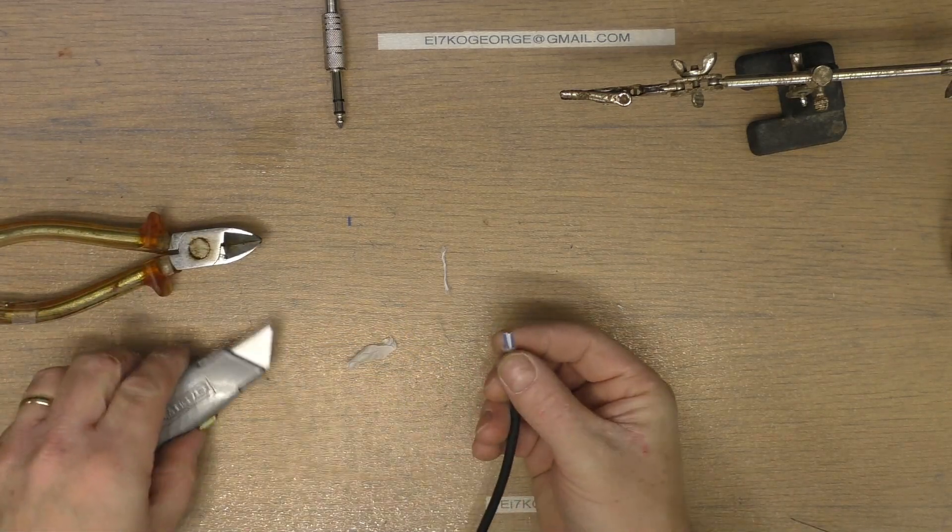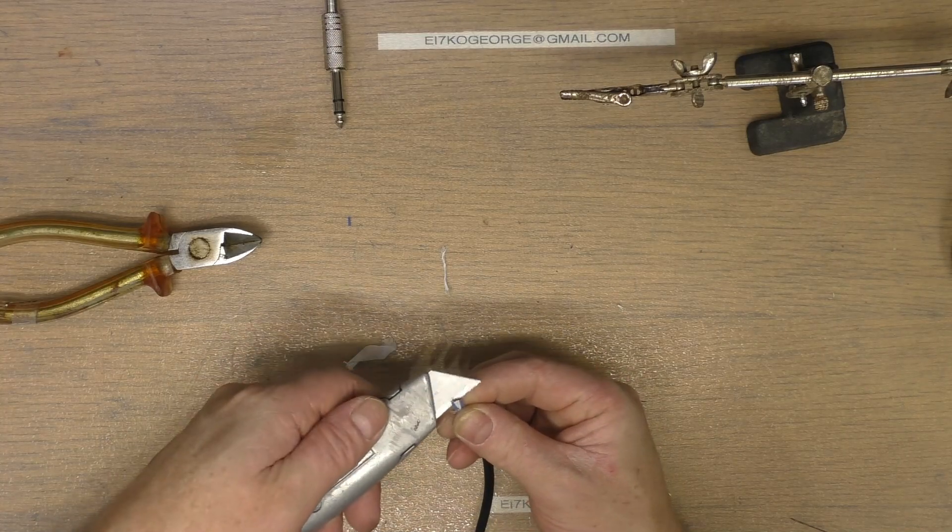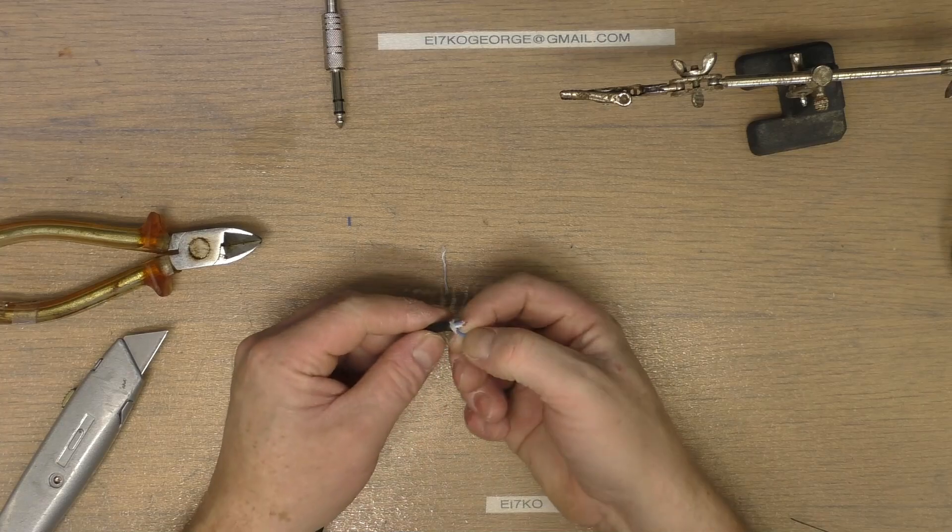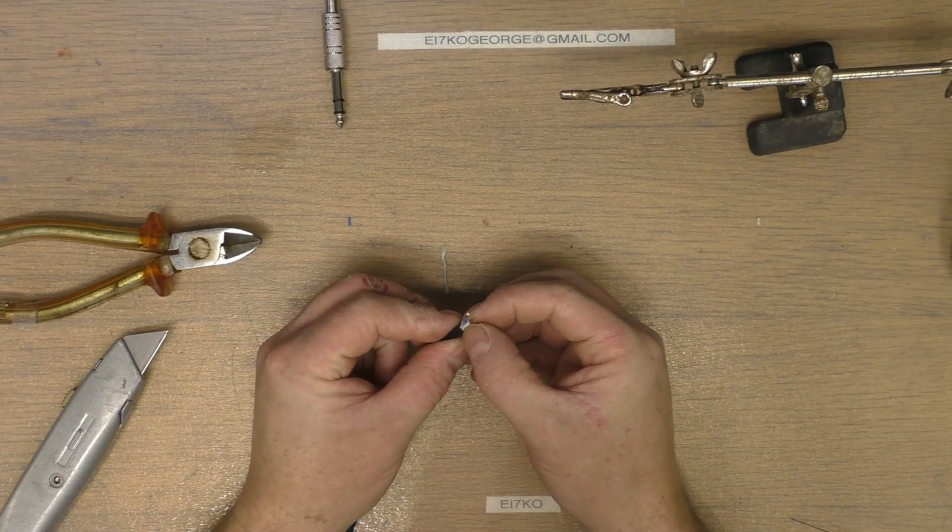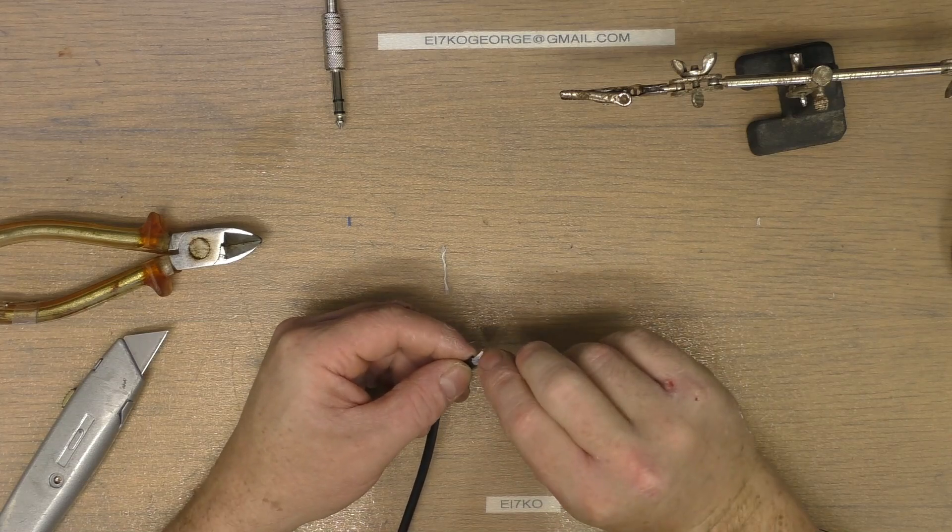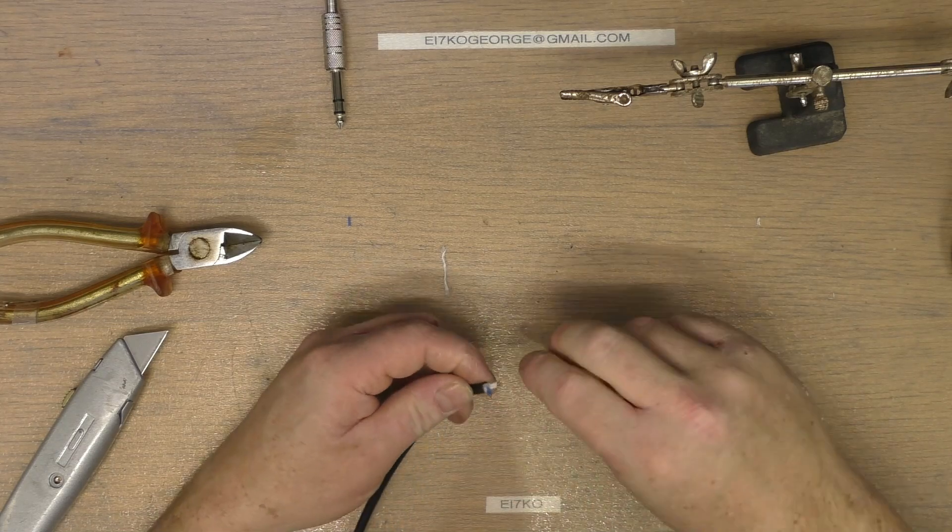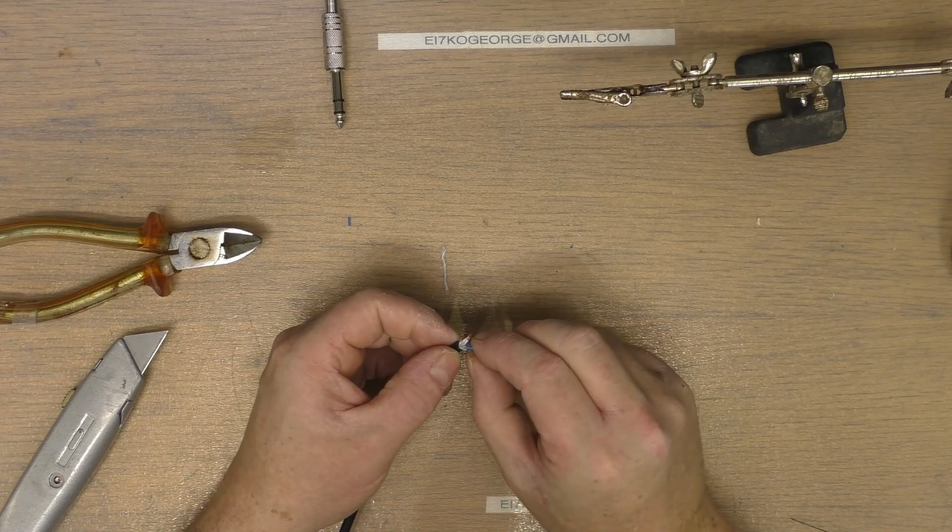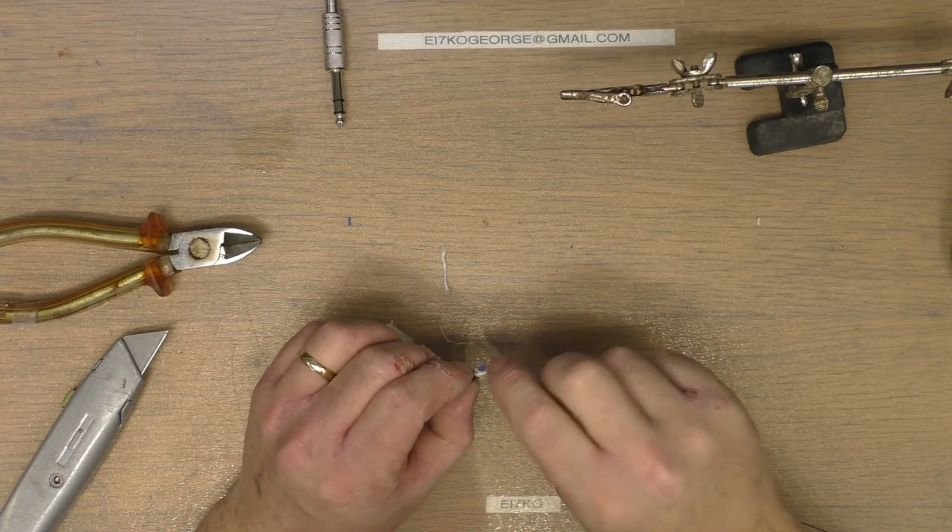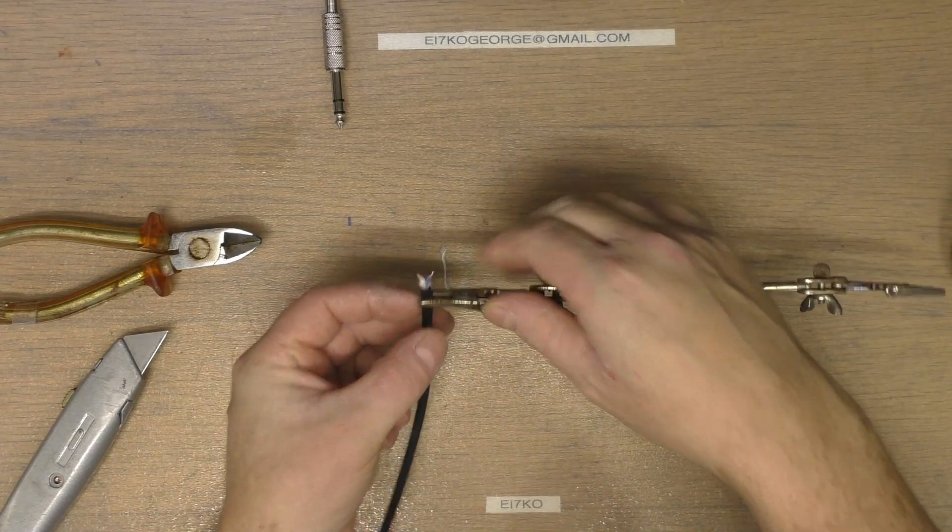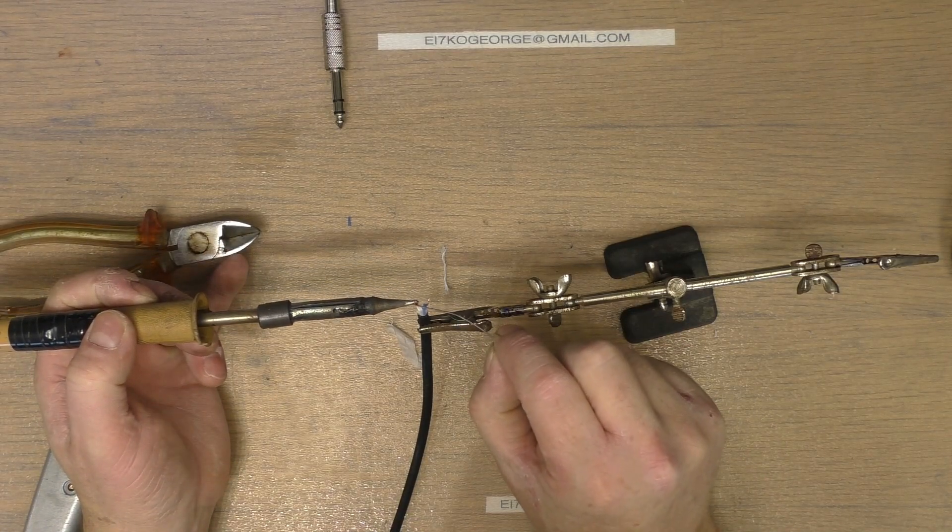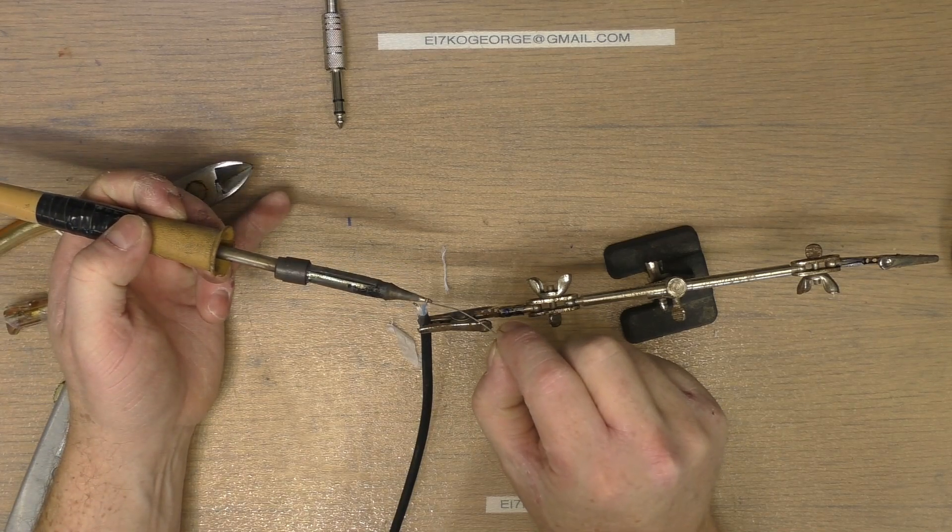You look at some of the sites and they'll be telling you to use transformers and this that and the other, and that can get very expensive very fast. Now I've done it this way from day one and I've never had any problems. So same story here, we'll tin the two of these and get them ready to put on the plugs.